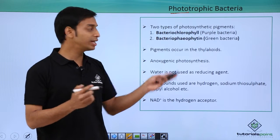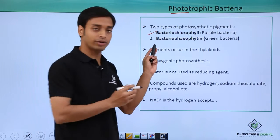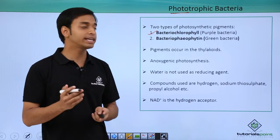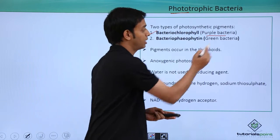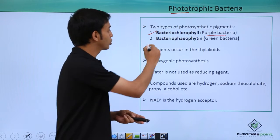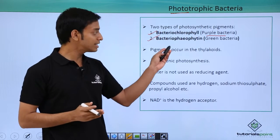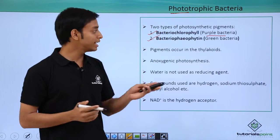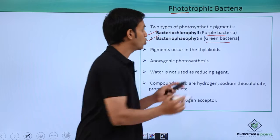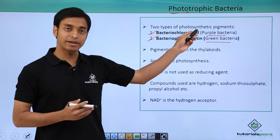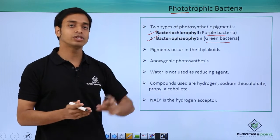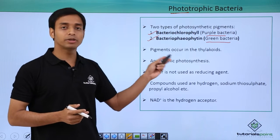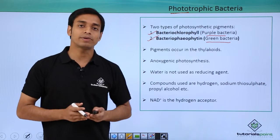The different types of pigments present in these bacteria can be bacterial chlorophyll, which is mostly found in purple bacteria, whereas the other type, known as bacteriopheophytin, is found in green bacteria. These are the major two types of photosynthetic pigments found in phototrophic bacteria, and these pigments are present in the phyllicoids.